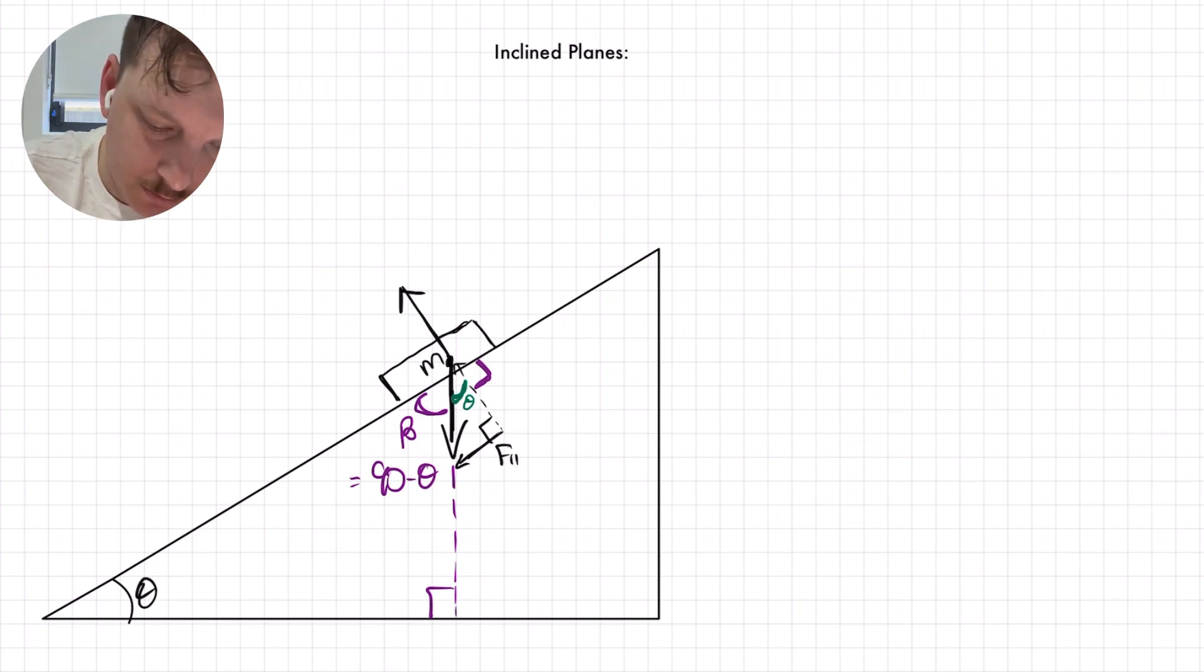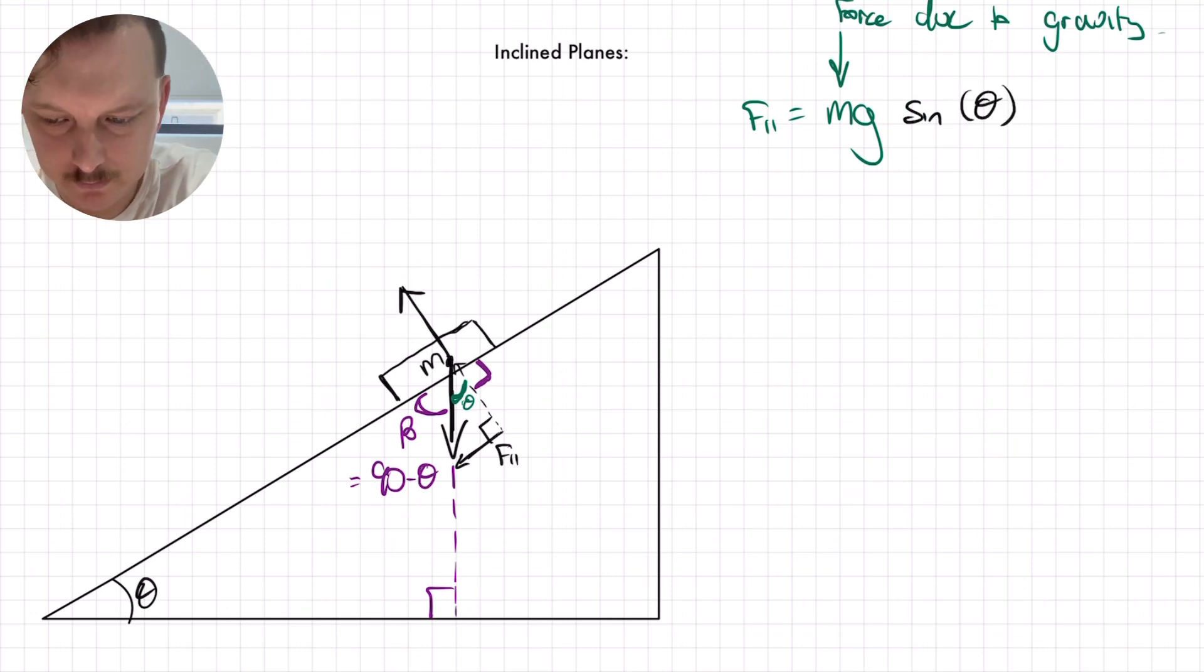This means that our reference angle is our top angle here. So if we have that, that means that our force parallel, or down the plane, is going to be equal to our hypotenuse, which is mg. That's our force due to gravity, times sine of the angle. And then our normal force, our force perpendicular, is going to be equal to the hypotenuse times cosine of theta.